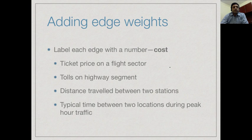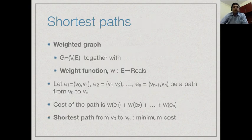Now we look at what happens if we add costs to edges. Depending on the application, these costs have several natural interpretations. On an airline routing map, the edge weight could be the ticket price. If edges represent roads, it could be the toll on a particular segment. On a railway network it might represent the distance between two stations, or on a city roadmap it might represent the time expected between two intersections at busy times. A weighted graph is just a normal graph with an extra weight function assigning each edge a real number.